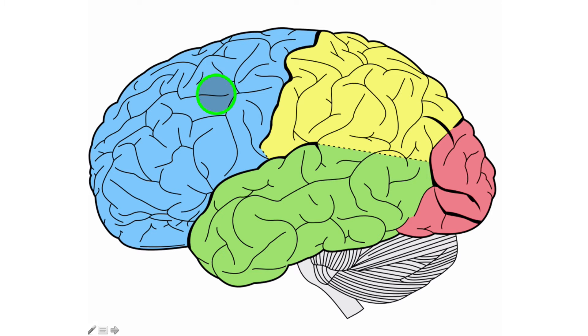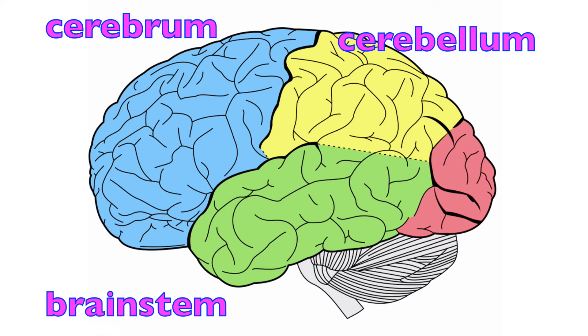And I need to back up and say the brain collectively is composed of three large regions: the cerebrum, the cerebellum, and the brain stem. So everything colored right here is representing the cerebrum, specifically the left cerebral hemisphere.